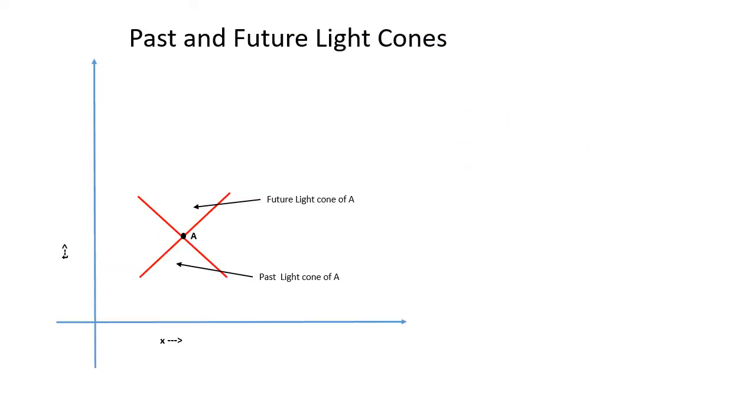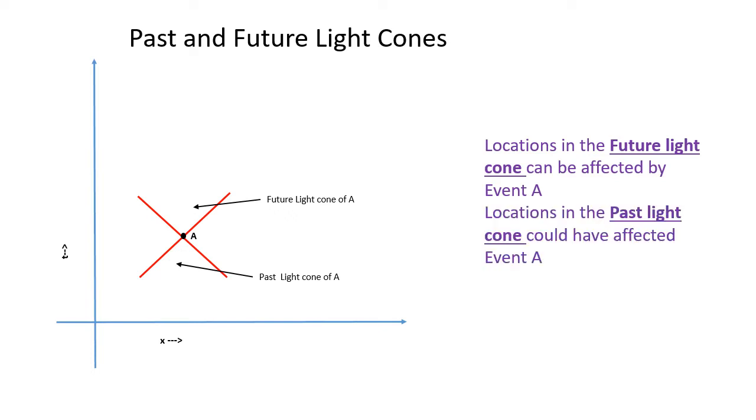If we consider an event at a location, call it A, in spacetime, all locations in the future light cone have a time-like separation and can be affected by event A. Locations in the past light cone also have a time-like separation and could have affected or communicated with event A. Regions outside the light cone have a space-like separation and cannot affect or be affected by event A.